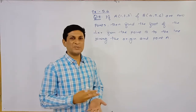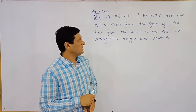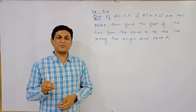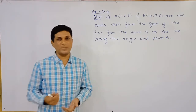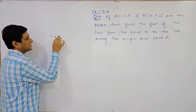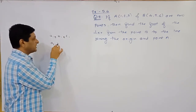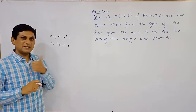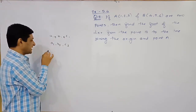We are solving the last example from exercise 5.4, where the condition is related to perpendicular lines. First, we discuss one important condition satisfied by direction ratios of two lines if they are perpendicular. Let the direction ratios of the first line be a1, b1, c1, and the direction ratios of the second line be a2, b2, c2.